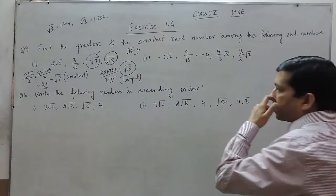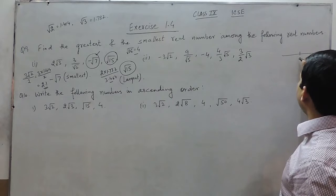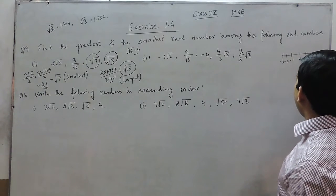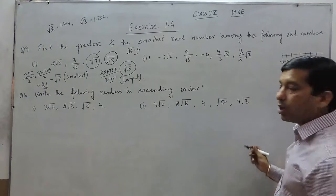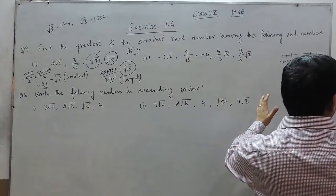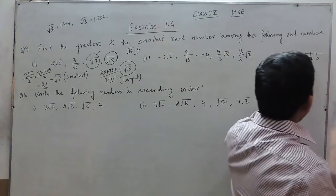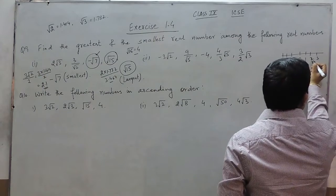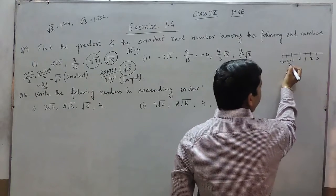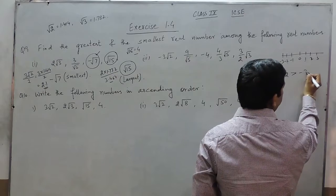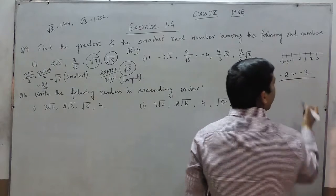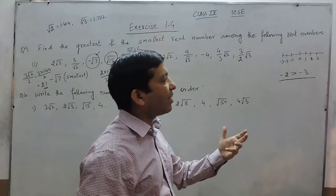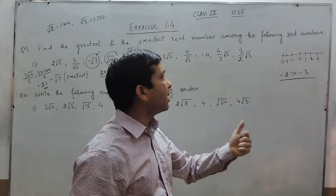We have to keep one thing in mind: when we talk about negative numbers and positive numbers on a number line, the right side number is always greater than the left side number. So 3 is greater than 1, and 2 is greater than 1. Same way, minus 2 is greater than minus 3. This means if the absolute value is more in the negative term, then the number is less.